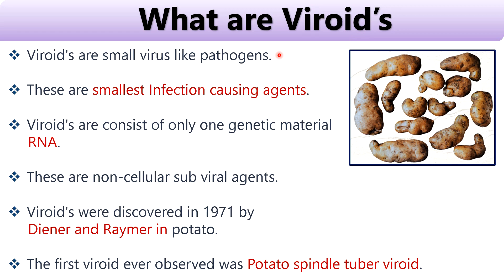Viroids are small virus-like pathogens. These are the smallest infection-causing agents, consist of only one genetic material, RNA. Viroids are non-cellular subviral agents that mainly affect plants. Viroids were discovered in 1971 by Diener and Rhymer in potatoes. Before that, viruses were considered as the smallest infection-causing agents. The first viroid ever observed was potato spindle tuber viroid, which affects potatoes.